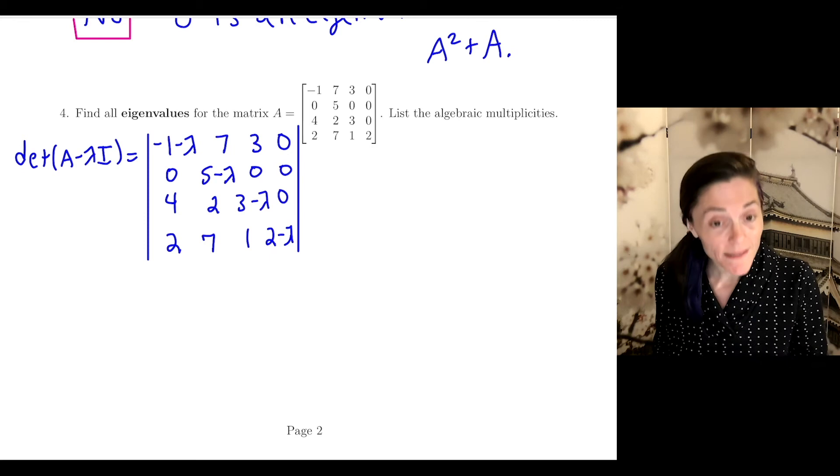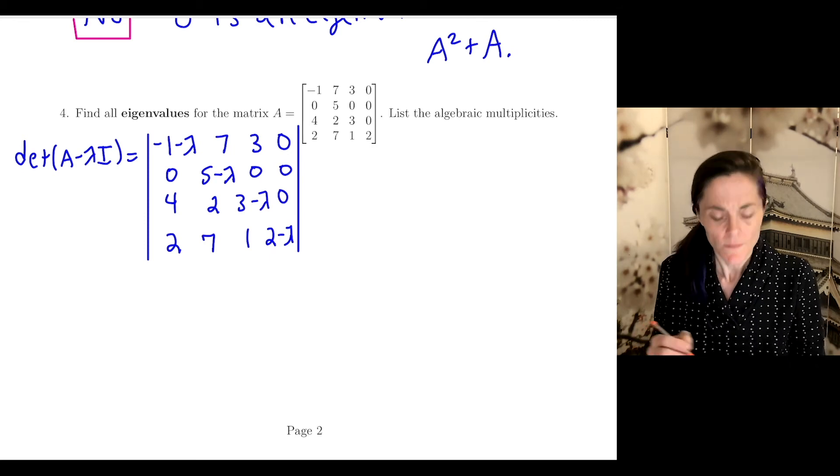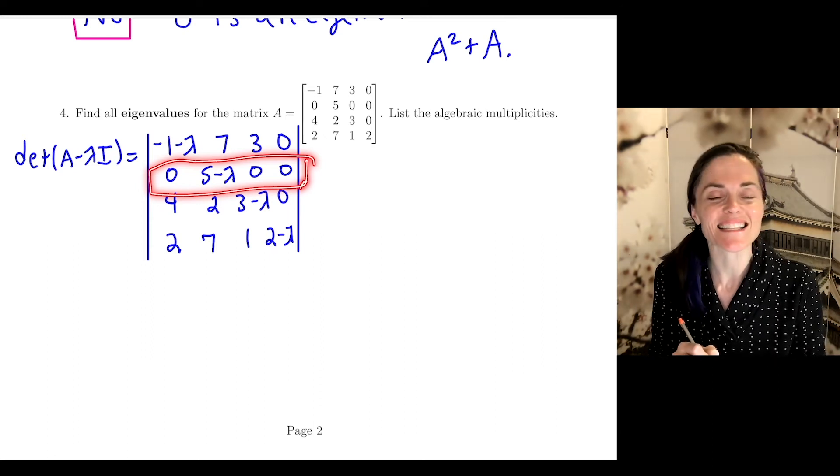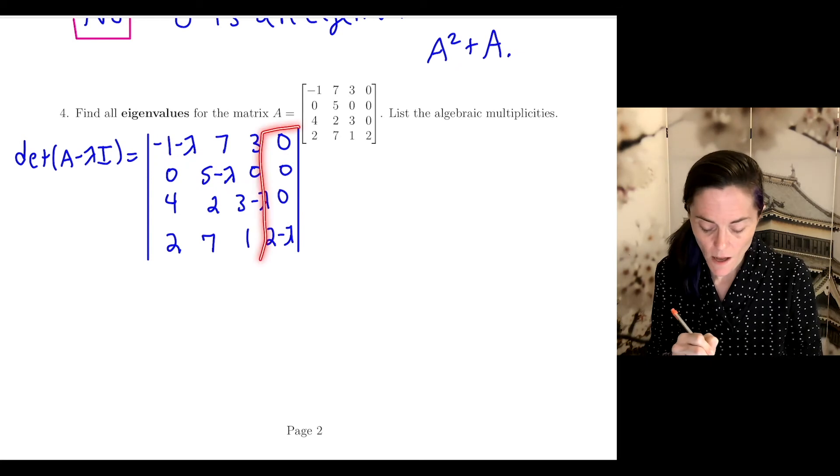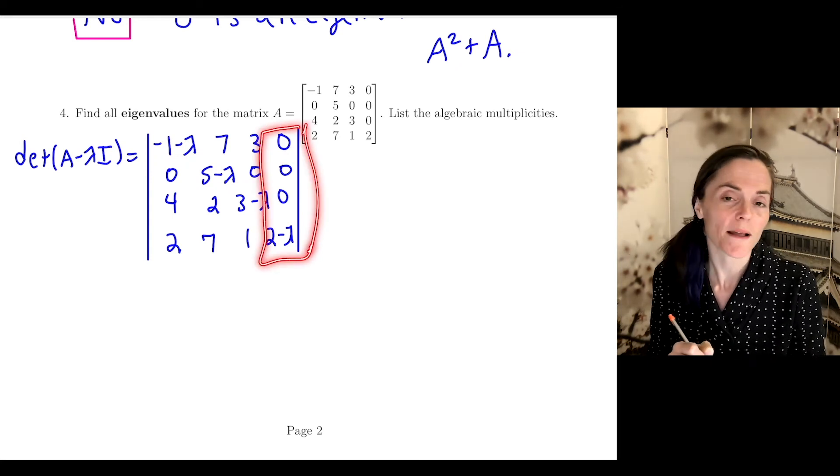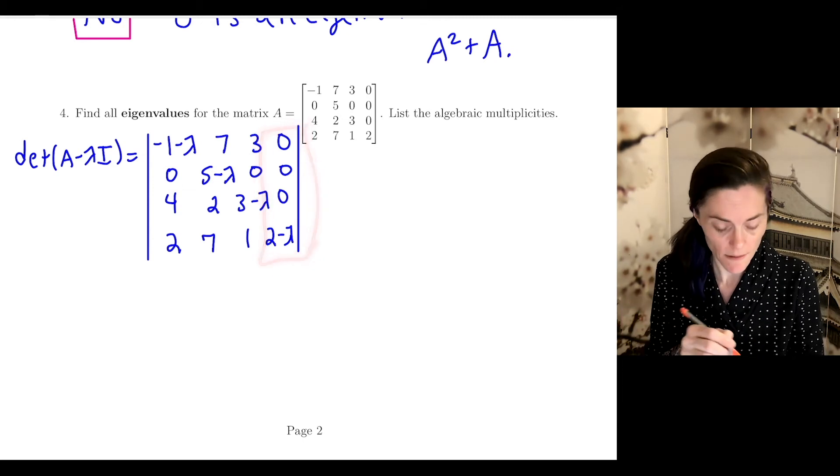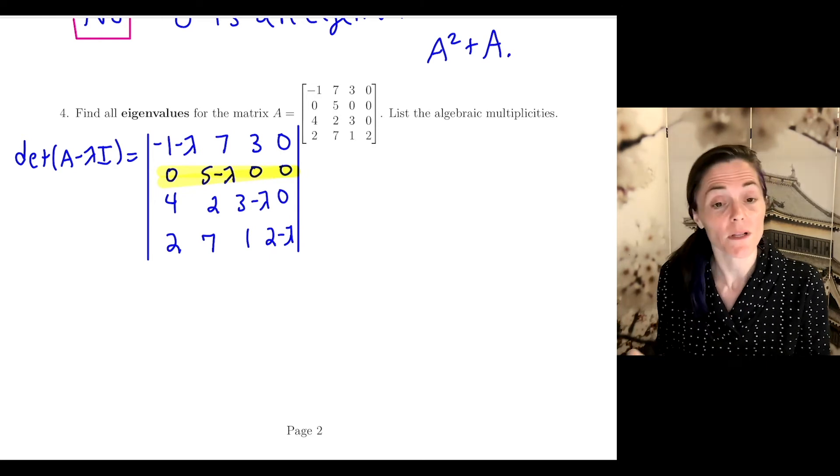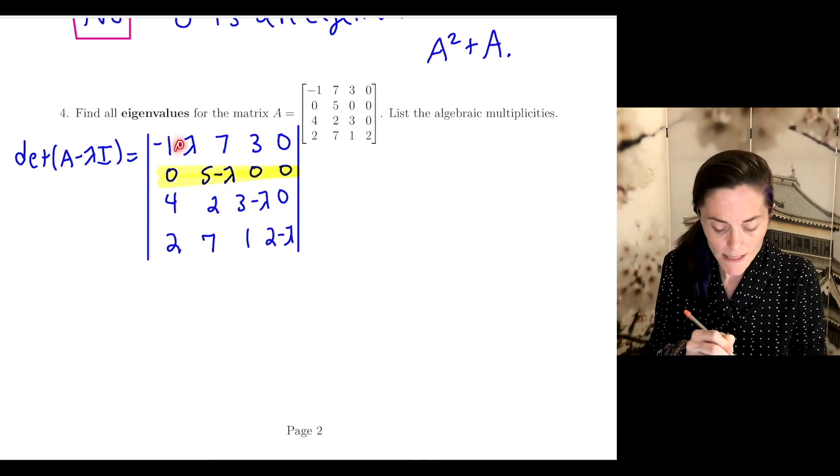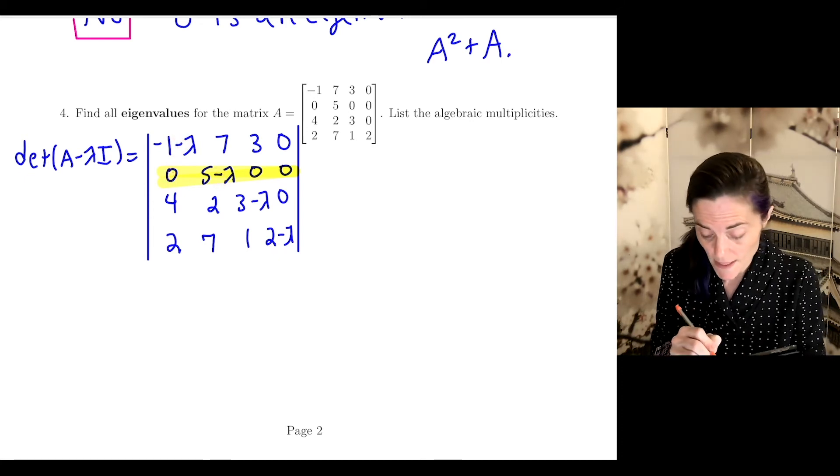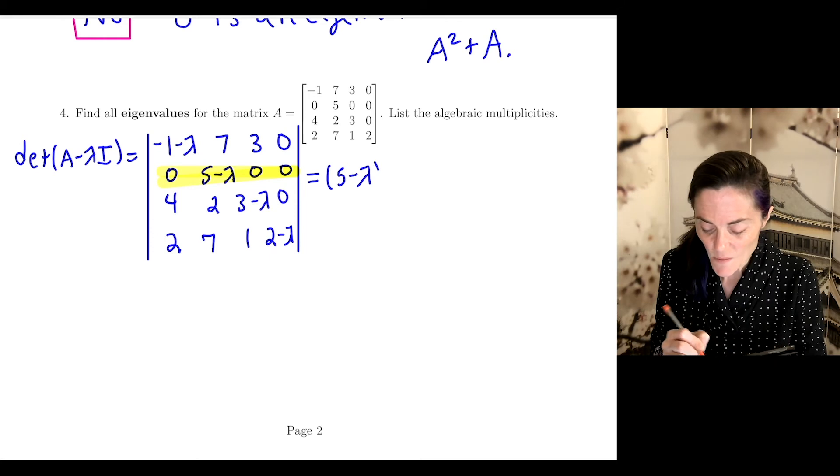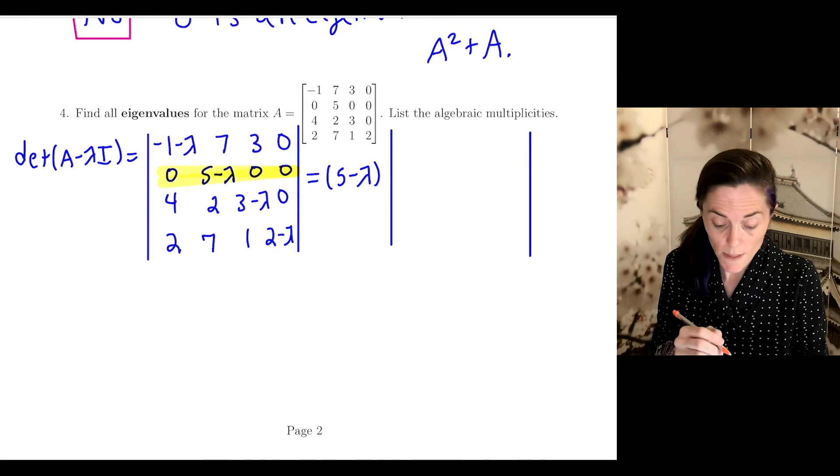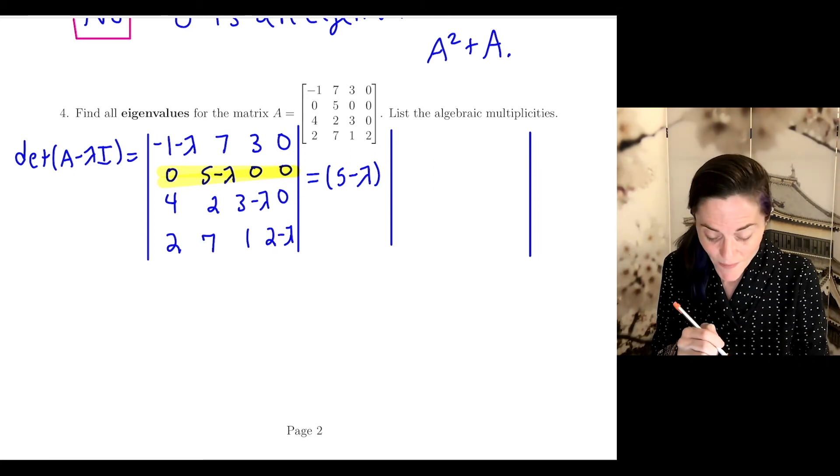I have some choice about how to expand here because, for example, here I have a row where every entry is 0 except for 1. That would be a nice choice. Also, here I have a column where every entry is 0 except for 1. I think I'll just use this one, though really either is perfectly fine. To get the sign, plus minus plus, we have plus (5 - λ), and then we will have a 3 by 3 determinant.